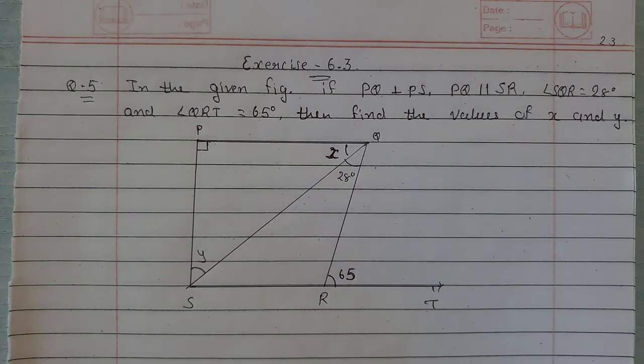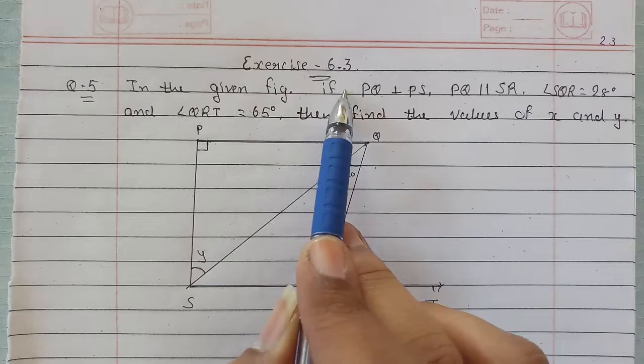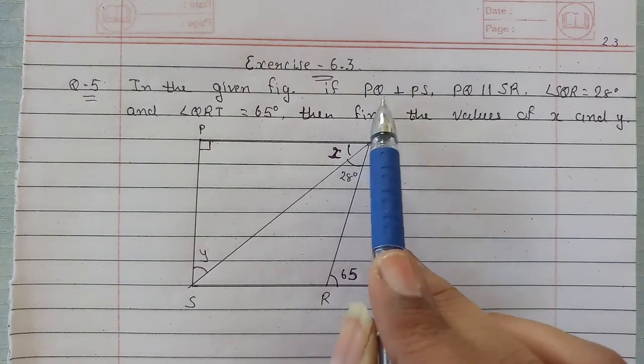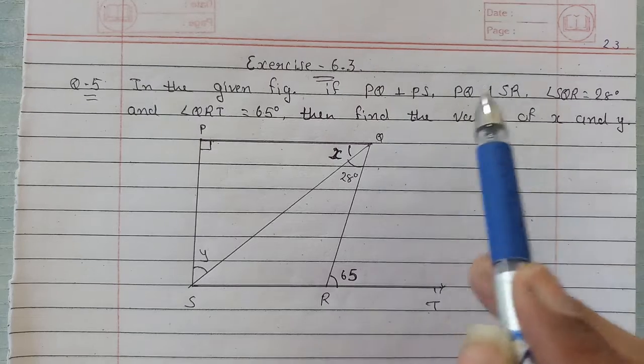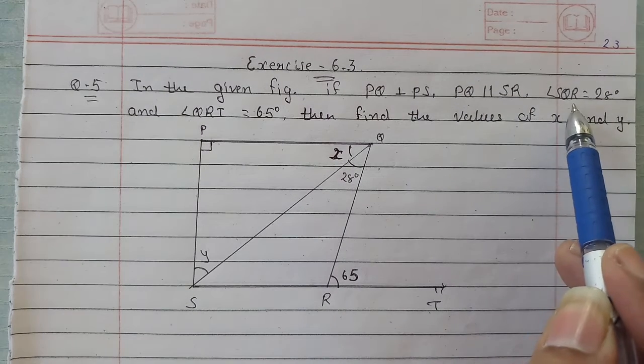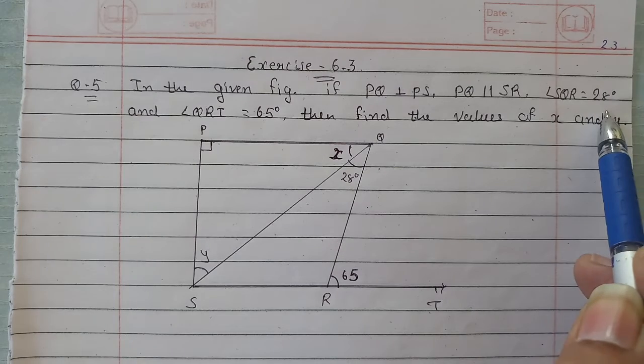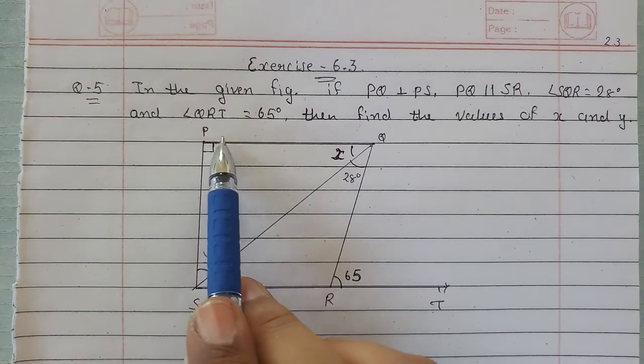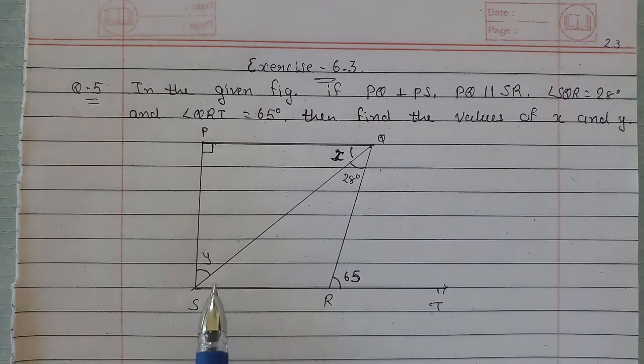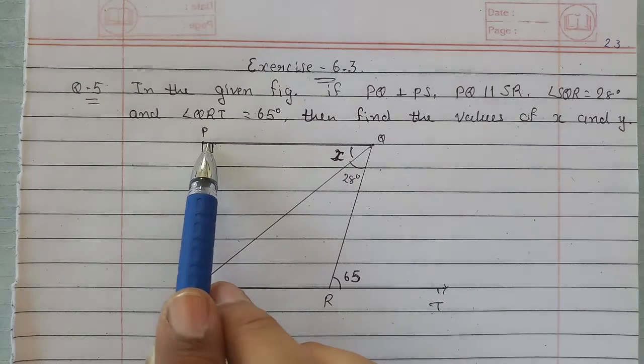Hello students, in this session we will continue with Exercise 6.3, Question 5. In the given figure, if PQ is perpendicular to PS, PQ is parallel to SR, angle SQR is equal to 28 degrees, and angle QRT is equal to 65 degrees, then find the values of x and y.